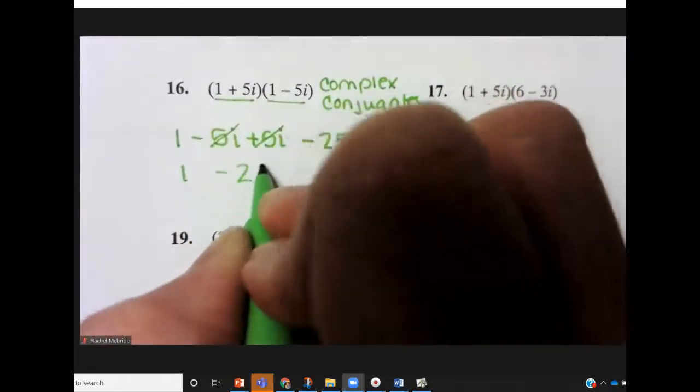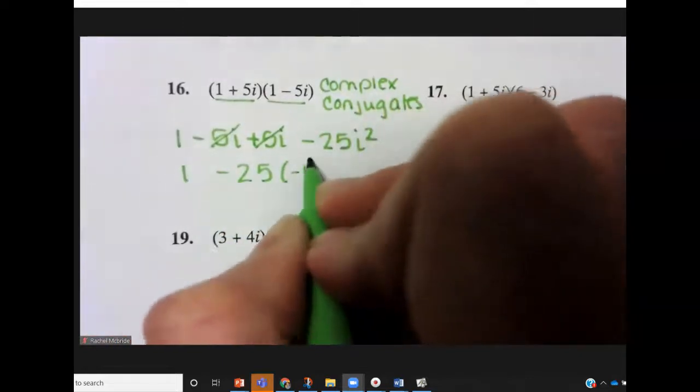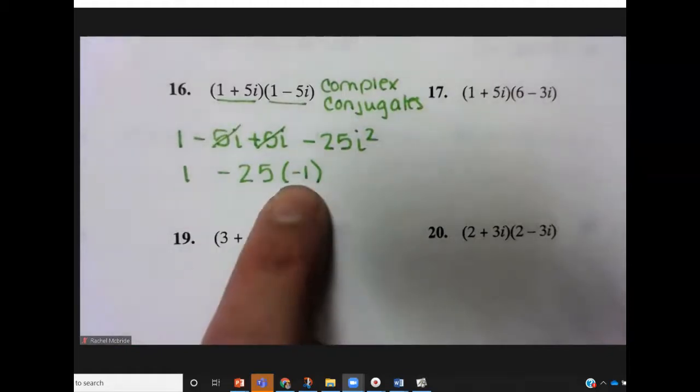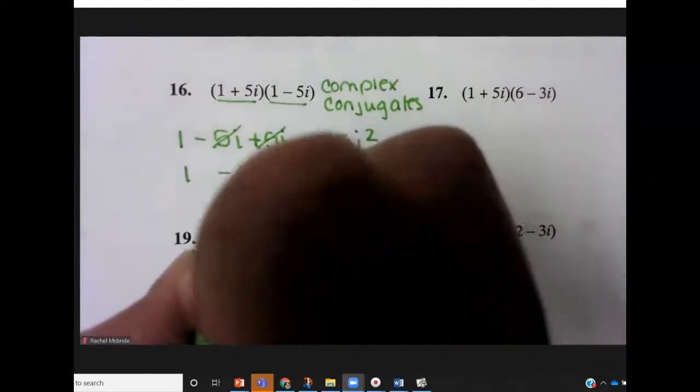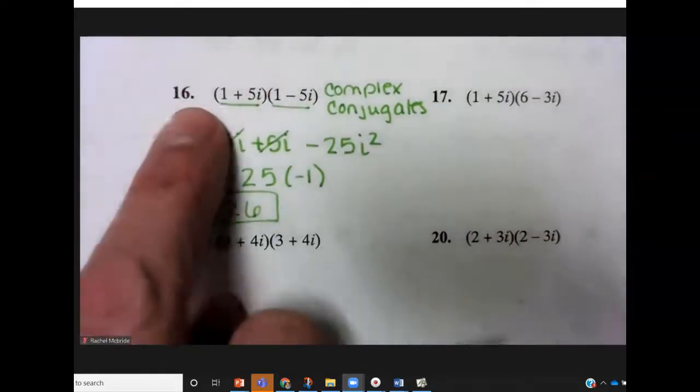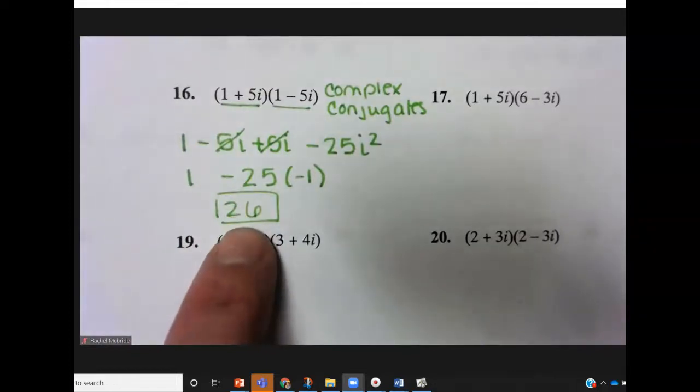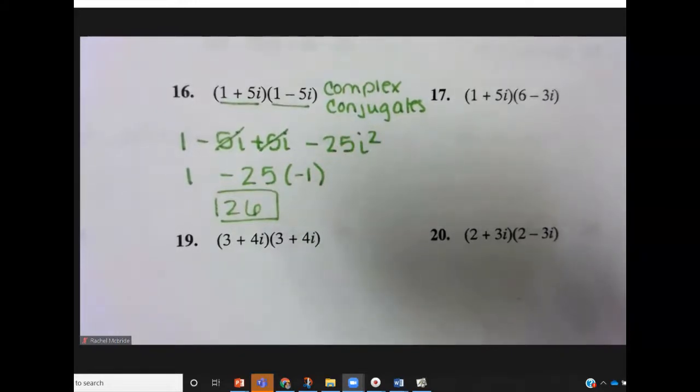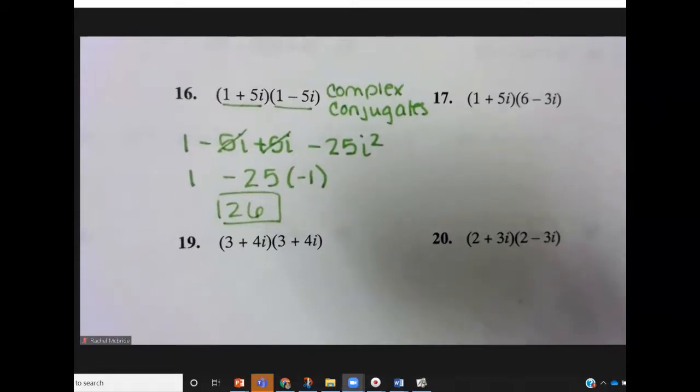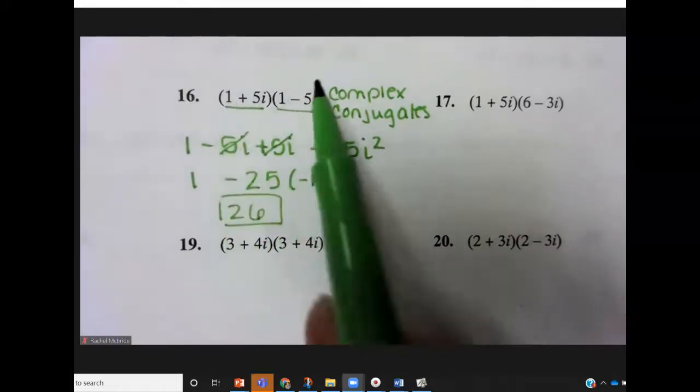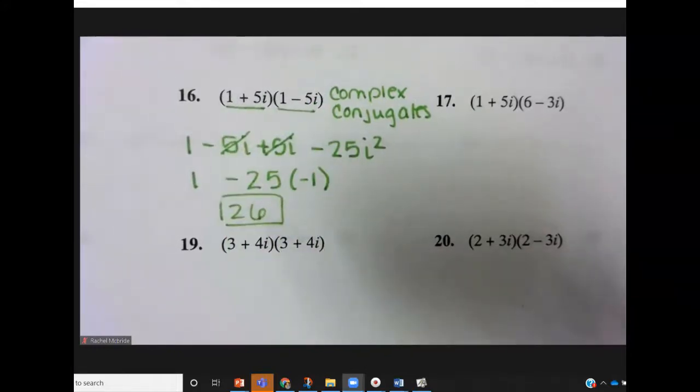Combine like terms so negative 5i and positive 5i cancel. And you get 1 minus 25, fill in a negative 1 where i squared is. So a negative times a negative is a positive, so 1 plus 25 is 26. And it should make sense that 16 simplifies to a real number. Because by definition, if you multiply two complex conjugates together, you get a real number. That's the idea behind a complex conjugate.